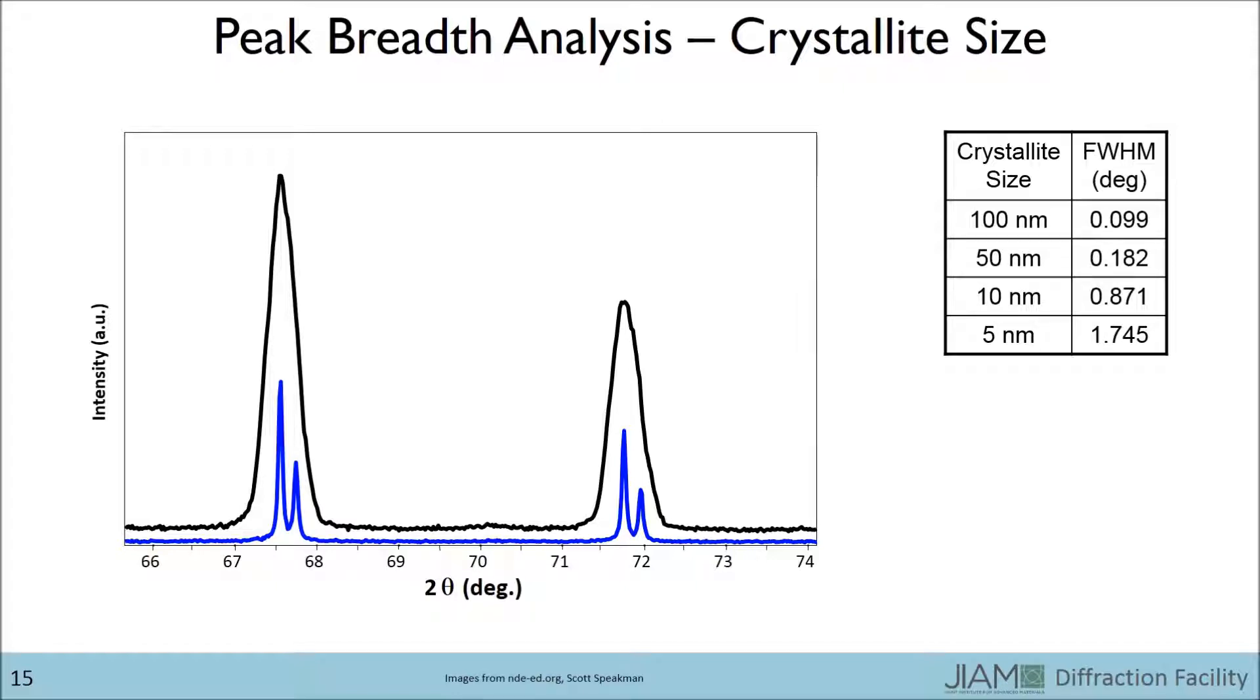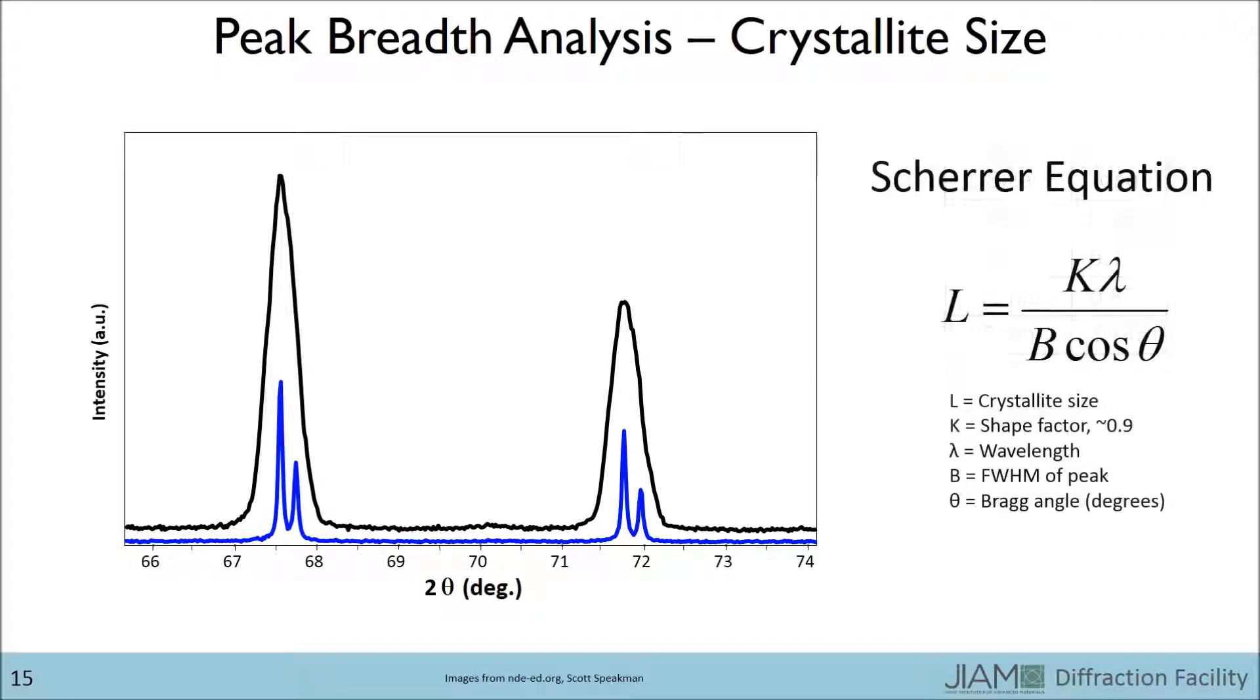In order to calculate the crystallite size, a popular method is to utilize Scherrer's equation shown here. It is a pretty straightforward equation where the crystallite size L equals the shape factor K, typically taken to be around 0.9, times the wavelength λ of the x-rays, divided by the product of the FWHM in radians of a particular peak B, and the cosine of the Bragg angle θ of the same peak. This equation appears so simple, but you can't let the simplicity tempt you to use it with less consideration than you should.